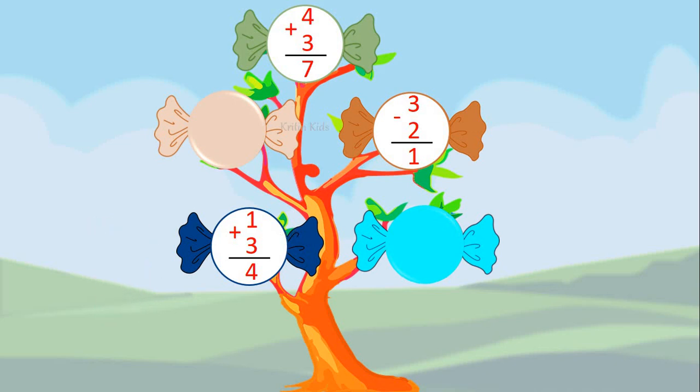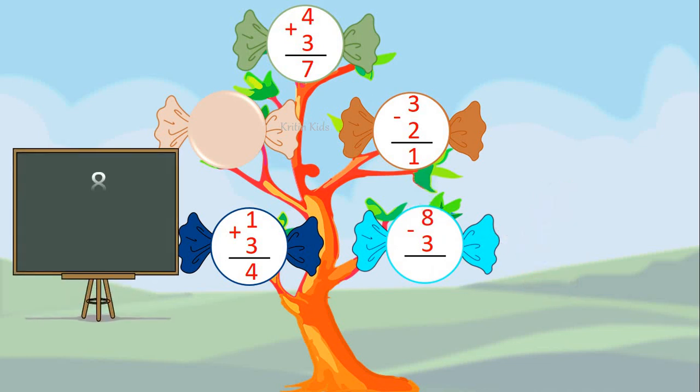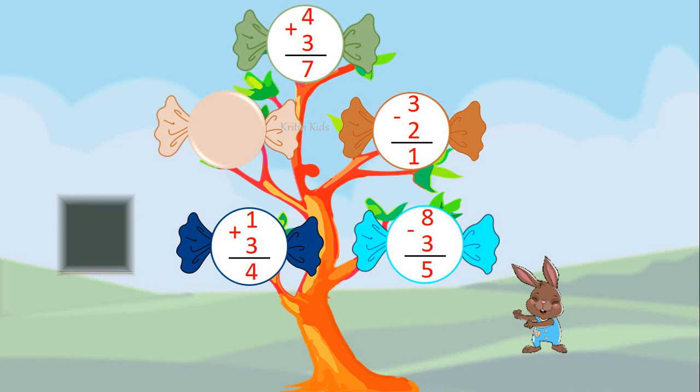Now let's check this one. Eight minus three. For this we should open eight fingers and close three fingers. So eight minus three gives us five.